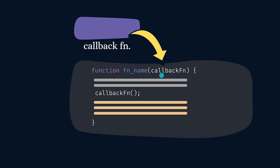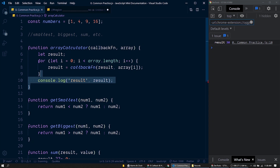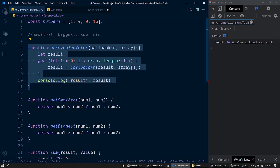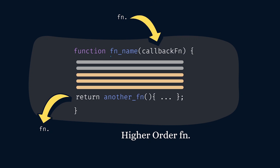The function which receives a callback function through its parameter is called a higher-order function. In our program, the function 'arrayCalculator' is the higher-order function. There are also functions which can return a function back to the caller — those also come under higher-order functions. So a higher-order function is a function that accepts a callback function through its parameter or returns a new function back to the caller.